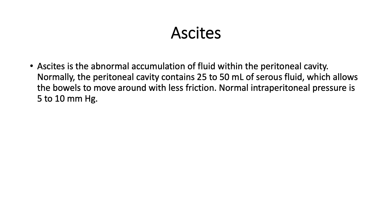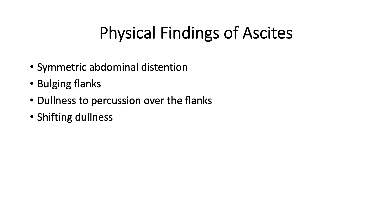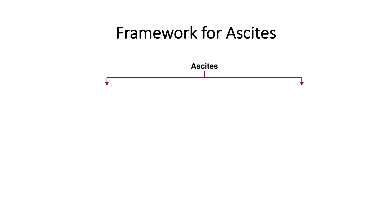Before we do, let's review some basic information about ascites. Ascites is the abnormal accumulation of fluid within the peritoneal cavity. Patients with ascites often present with predictable symptoms including increased abdominal girth, a sensation of abdominal fullness or discomfort, dyspnea, early satiety, and a sense of decreased mobility. Physical findings include symmetric abdominal distension, bulging flanks with dullness to percussion, and shifting dullness. Now we're ready to build our framework for ascites.